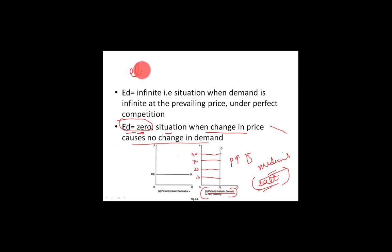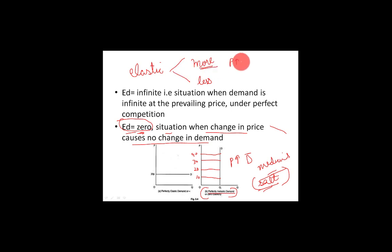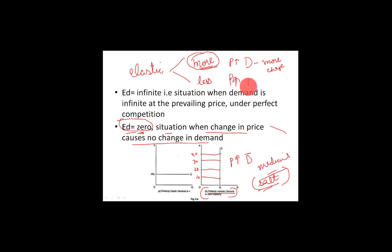So the price increases but demand stays the same — this is known as zero elasticity, and we use the term perfectly inelastic demand. Perfectly inelastic demand means there is no variation in quantity demanded regardless of price change.